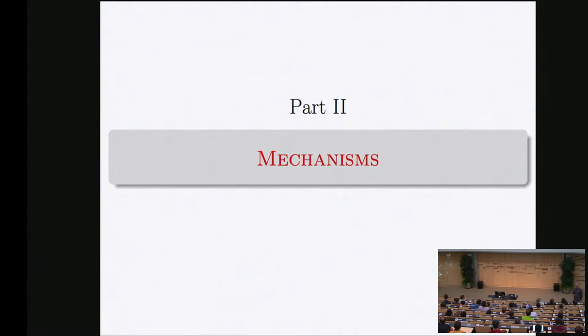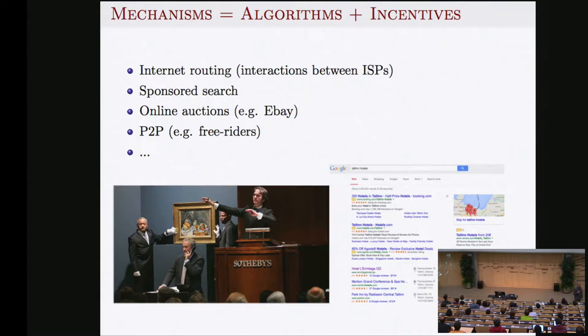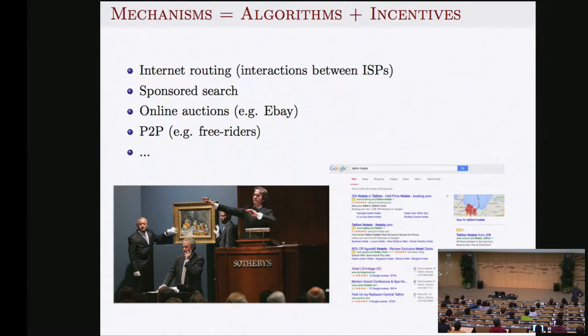A typical example of a mechanism is an auction. Applications of mechanism design include internet routing — the internet consists of thousands of entities, ISPs, that each want to optimize their own profit. When you send a message from here to São Paulo it goes through many companies' routers, each optimizing their own profit. We need mechanisms so they can collaborate and achieve a good solution.